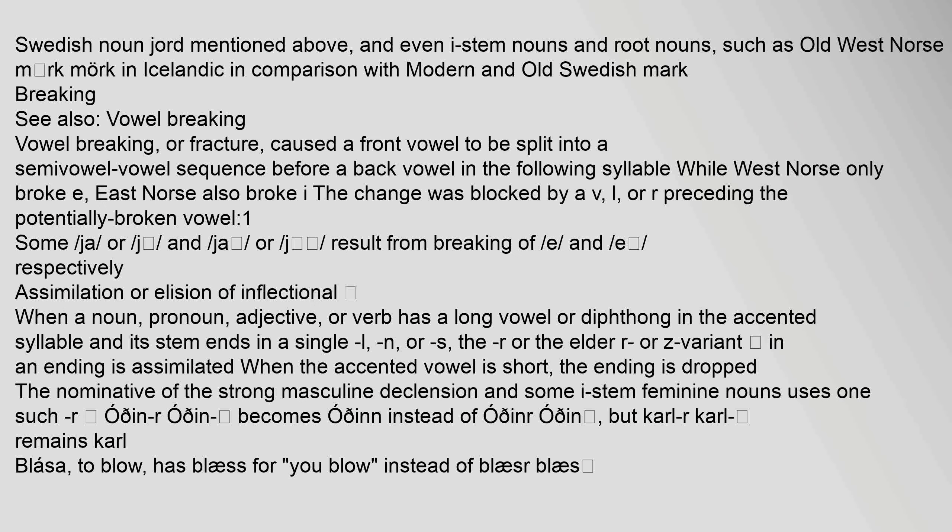Vowel-breaking, or fracture, caused a front vowel to be split into a semivowel-vowel sequence before a back vowel in the following syllable. While West Norse only broke E, East Norse also broke I. The change was blocked by a V, L, or R preceding the potentially broken vowel.